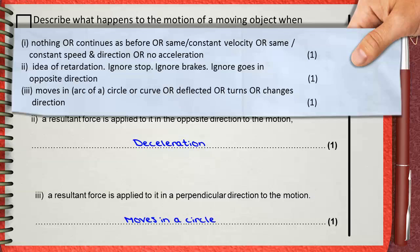For Part III — a force applied perpendicular to the direction of motion — you can say it will move in an arc of a circle, move in a curve, be deflected, turn, or change direction. Each one of these points is worth one mark.